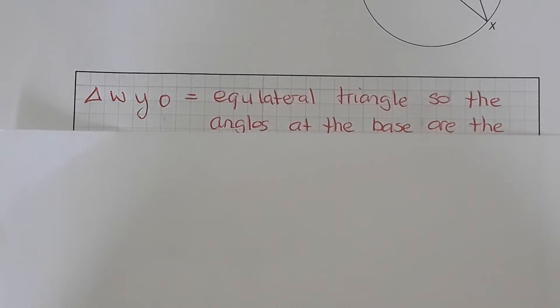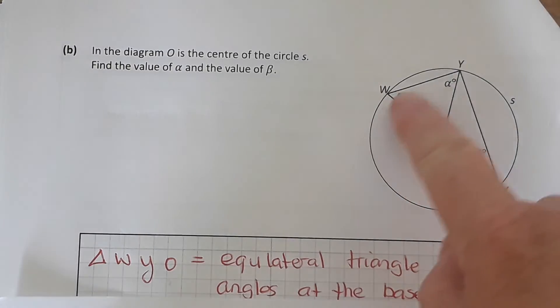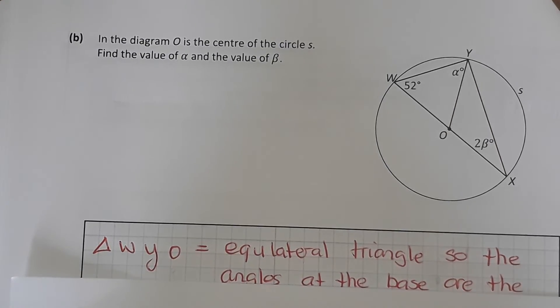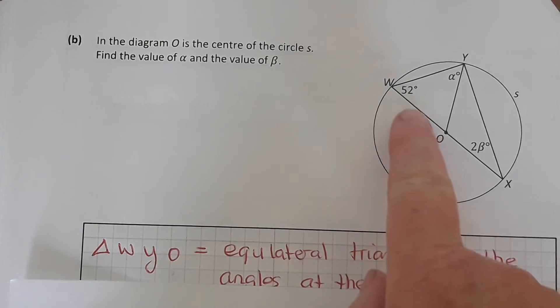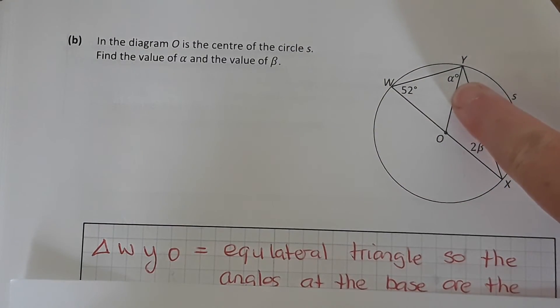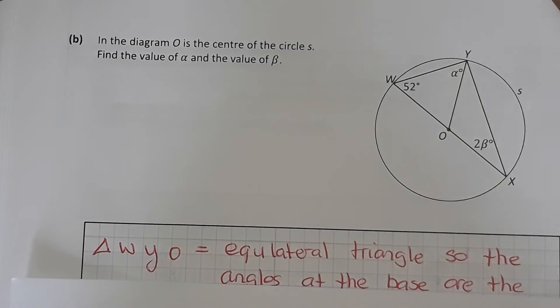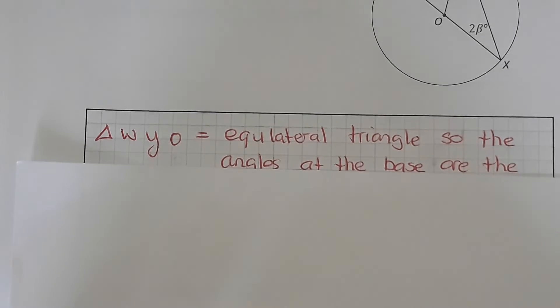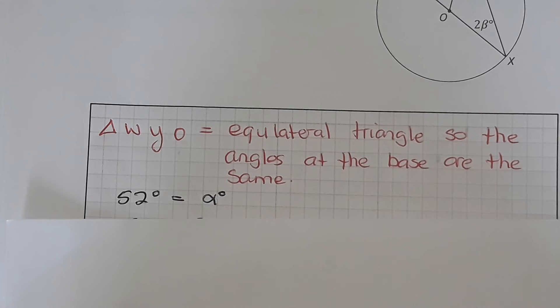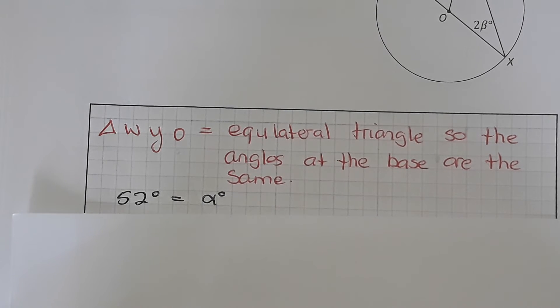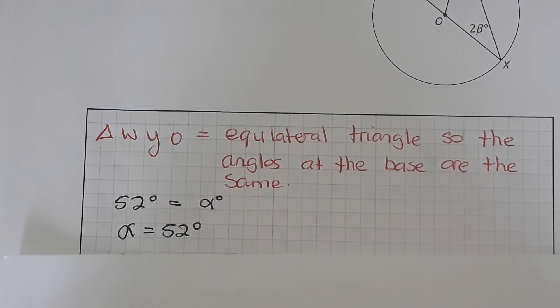So the first thing you know about the triangle is that the triangle WYO is an equilateral triangle, because this side here and this side here, they're both the radius so they're the same length, so that means they're equal. And when you have an equilateral triangle, then the angles at the base are the same. So it's an equilateral triangle, so the angles at the base are the same, so 52 degrees is equal to alpha. So alpha is 52 degrees.